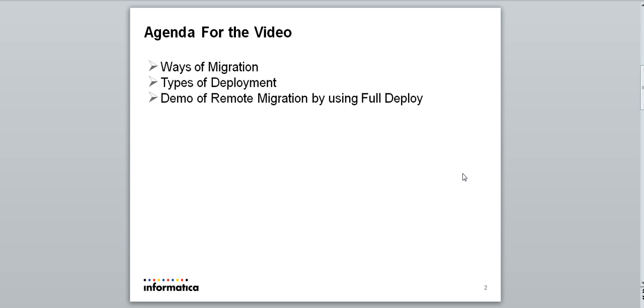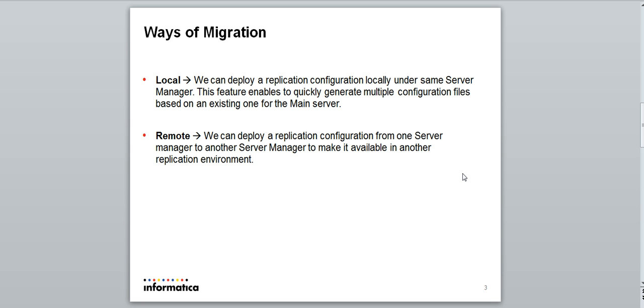In IDR, we can migrate the configs in two ways: local migration and remote migration. With local migration, we can deploy a replication configuration locally under the same server manager. This feature enables us to quickly generate multiple configuration files based on an existing one. With remote migration, we can deploy a replication configuration from one server manager to another to make it available in another replication environment. A common scenario for remote deployment is to deploy a configuration from a test environment to a production environment.